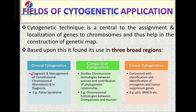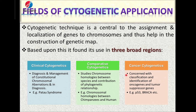Clinical cytogenetics involves the diagnosis and management of constitutional chromosomal aberrations. Examples include Patau syndrome, Down syndrome, and Klinefelter syndrome. Comparative cytogenetics involves the study of chromosomal homologies between species and contribution to phylogenetic relationships — for example, chromosomal homologies between chimpanzees and humans, and between rats and mice. Cancer cytogenetics is mainly concerned with the classification and identification of oncogenes and tumor suppressor genes, such as P53 and BRCA.